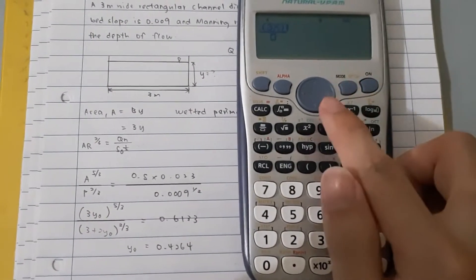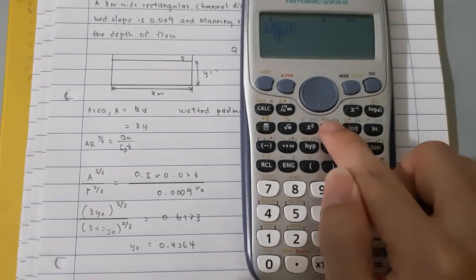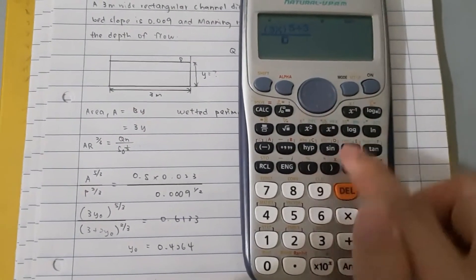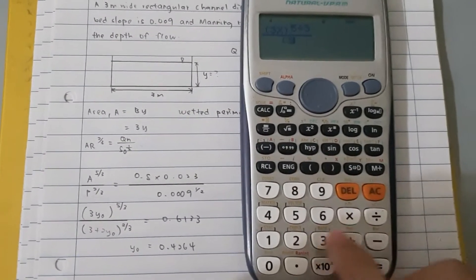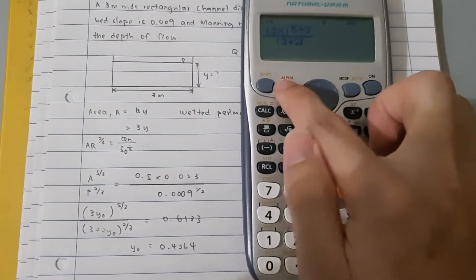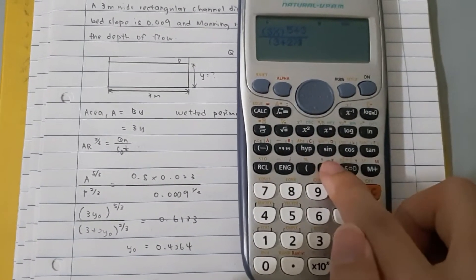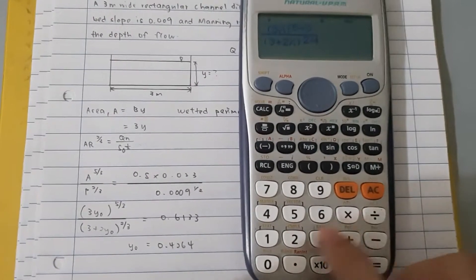So, continue typing our equation. Power of 5 over 3. Then, the below here is 3 plus 2y. Then, bracket power of 2 over 3.